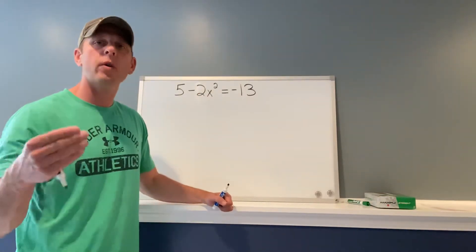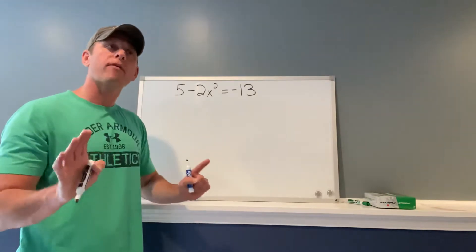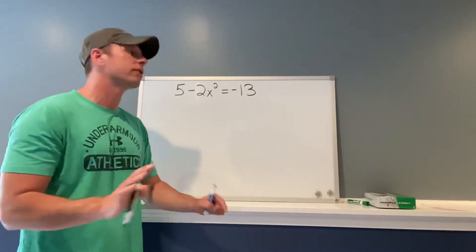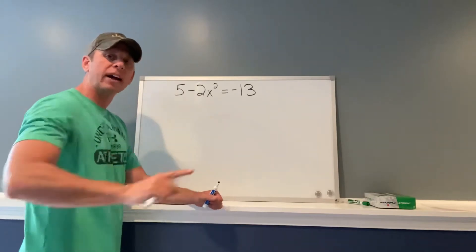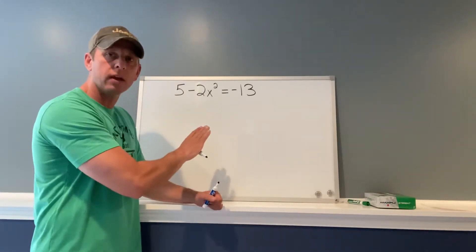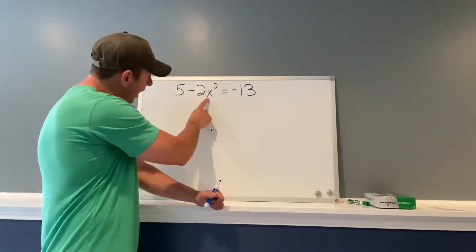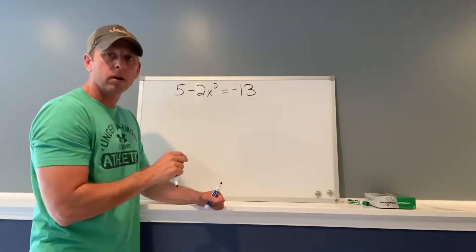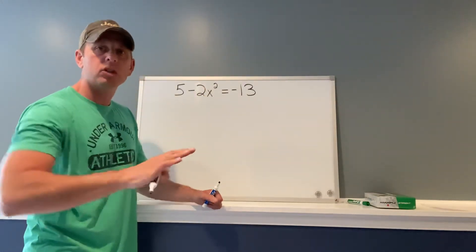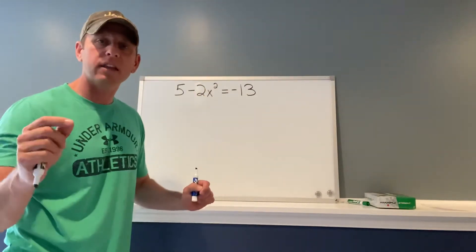Again, we are undoing operations. You'll remember from the past, sometimes we had some equations that had an x squared term and an x term. If that's the case, we can't solve it this way. But when we only have a squared variable and no other variables, just undo everything, isolate the variable.